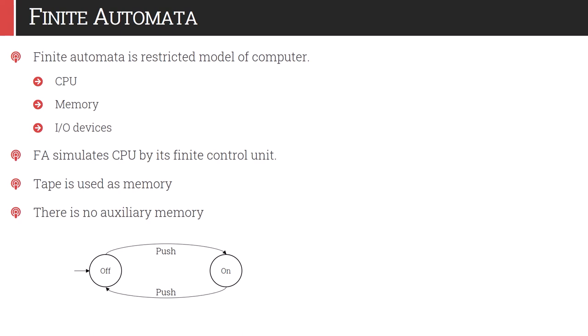Finite automata can be considered a restricted model of a computer. A computer has three things: CPU, memory, and I/O device. Finite automata simulates the working of a CPU through its finite control unit, where rules are written: if current state is this and input is this, then do this. For memory, a tape is used which holds the input string — one by one each symbol is processed and the finite automata keeps changing its state. There is no auxiliary memory in finite automata, which is its limitation. A computer is much more powerful because it has lots of other memory as well.